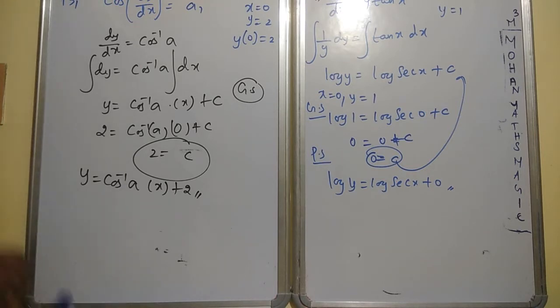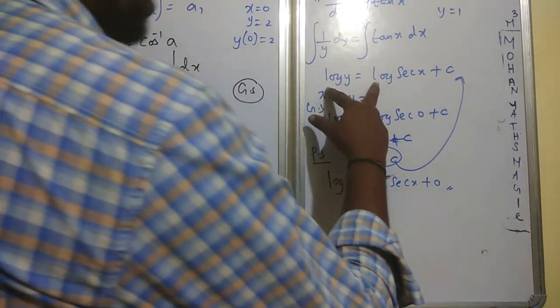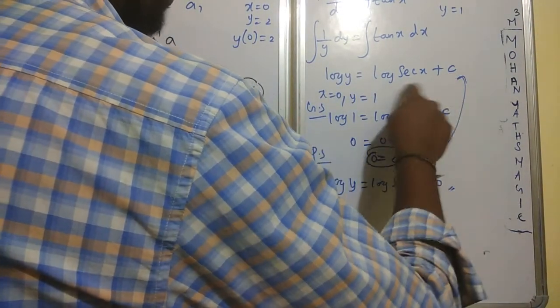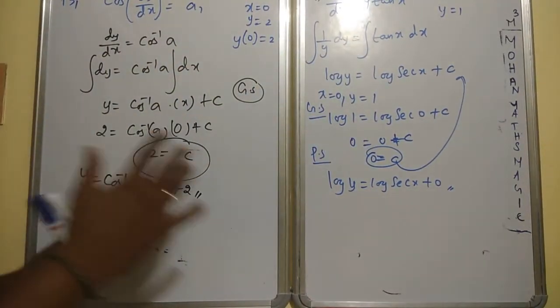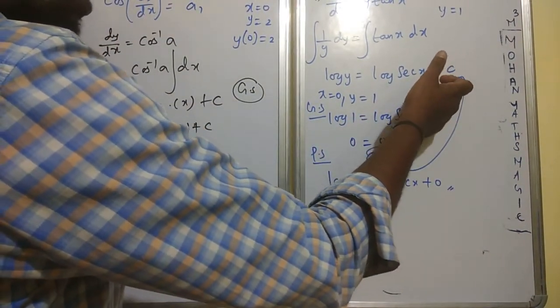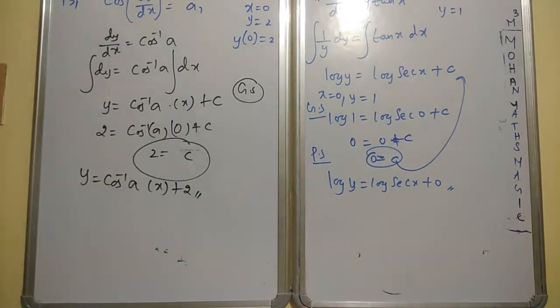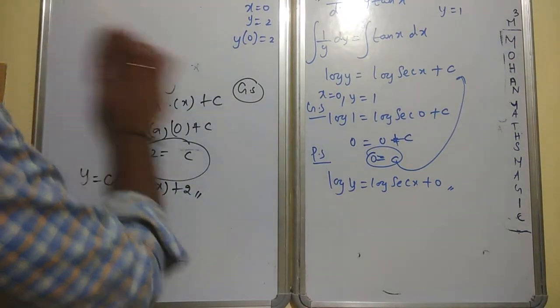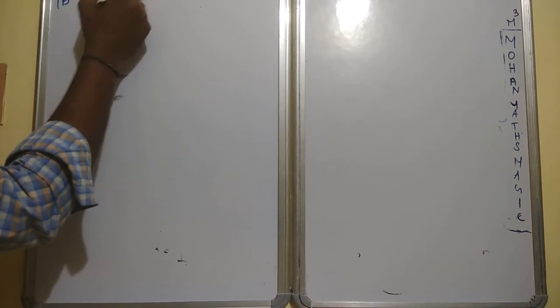Substitute x = 0, y = 1: log(1) = log(sec(0)) + C. Sec(0) = 1, so log(1) = 0 and C = 0. Particular solution: log(y) = log(sec(x)). Note on log C: if your textbook uses log C instead of plain C, you can write it as log(y) = log(sec(x)) + log(C) = log(C·sec(x)), giving y = C·sec(x). Now question 15: find the equation of a curve passing through (0, 0).